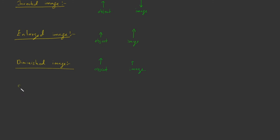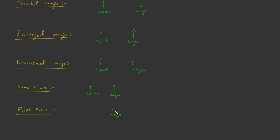Next is same size image. In this type, the image has equal size to that of the object — if the object is a certain size, then the image will also be of the same size. And the last term we are going to study here is point size, or highly diminished. In this case, the size of the image is highly diminished and it appears like a point. The image of the object appears like a point.